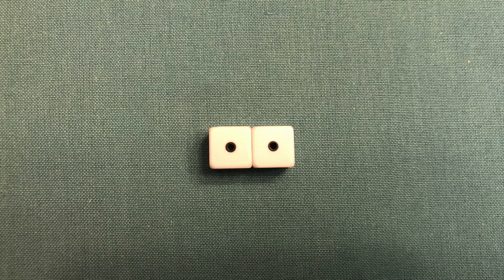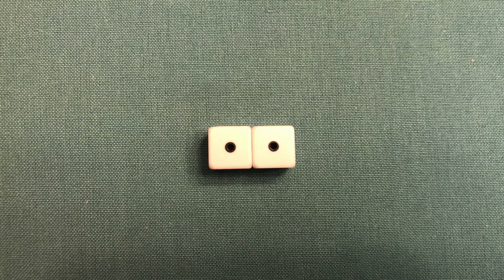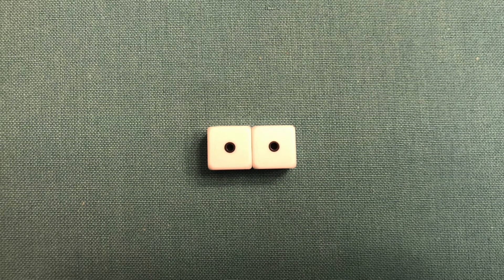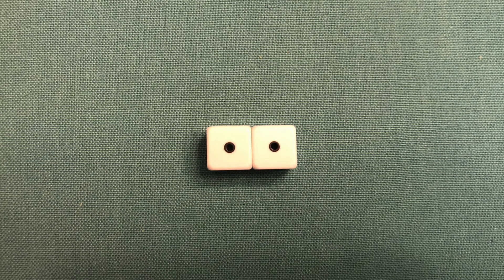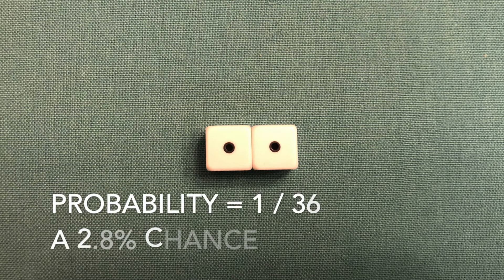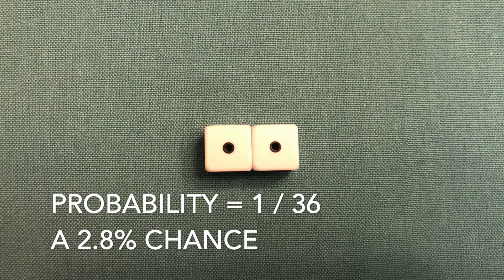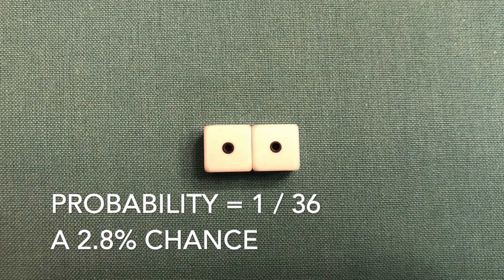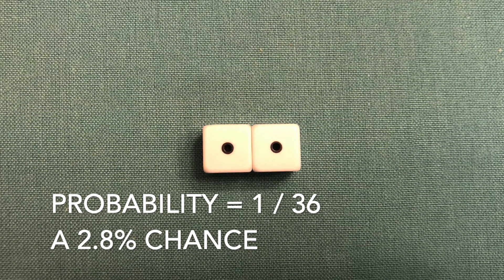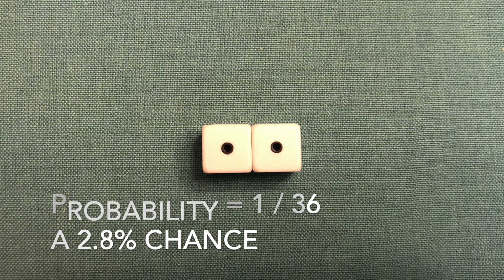Most people think the probability of rolling snake eyes on two d6 dice is either 1 out of 11 or 1 out of 12. That's incorrect. The probability of rolling snake eyes on two d6 dice is 1 out of 36, which is a 2.8% chance. This is because there is only one way you can roll snake eyes and the total possible results for the two d6 dice is 36.